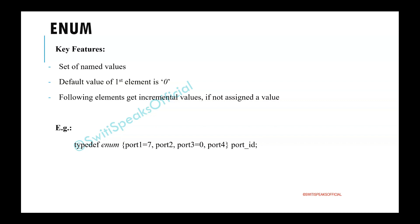So, it should get a value of 1. So, if you display, port1 should get the value of 7, port2 should get a value of 8, port3 should get a value of 0, and port4 should get a value of 1. And the name of this enum is port_id.